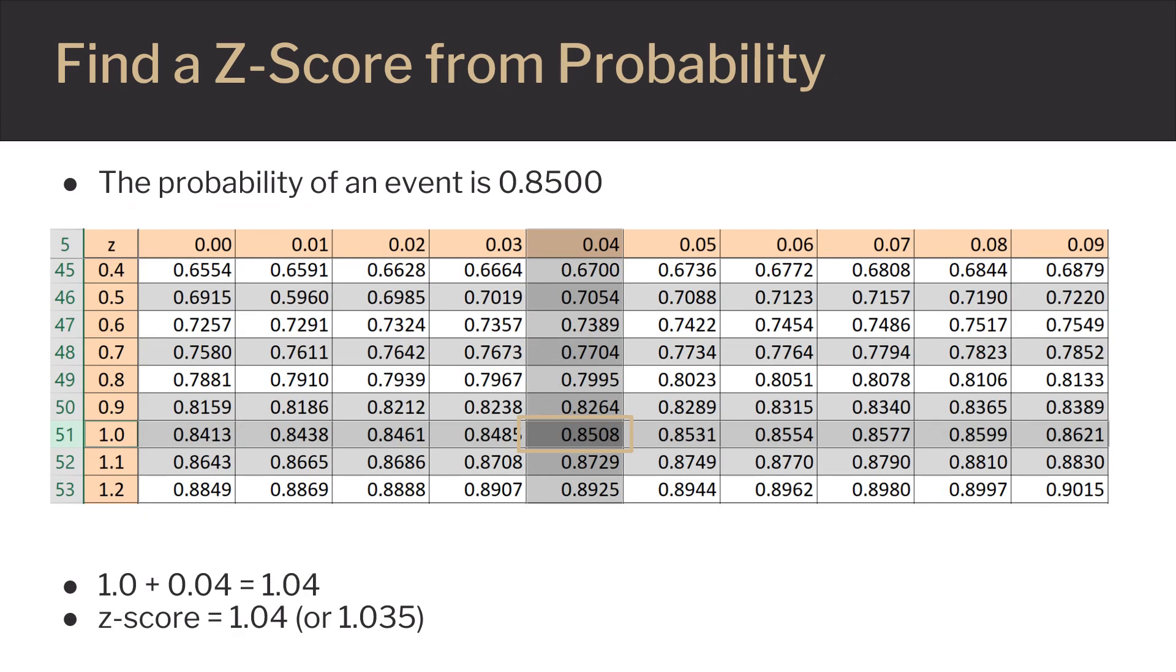If the probability of an event is 0.8500, you can look for that on the Z-table, but you won't find that exact value. Instead, you're going to find the next closest value you can. In this case, it is 0.8508. For 0.8508, it is in the row for 1.0, and it is in the column for 0.04. So, 1 plus 0.04 equals 1.04.